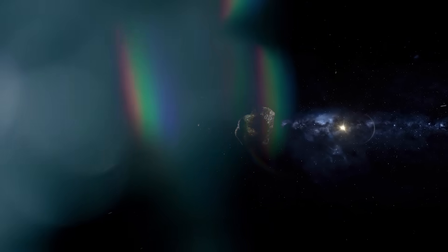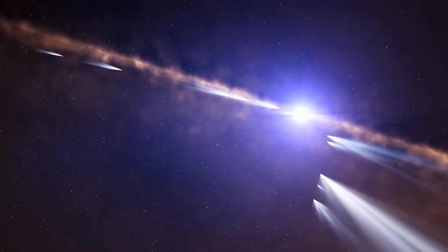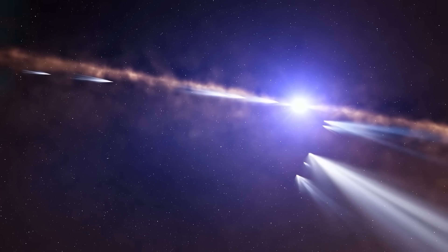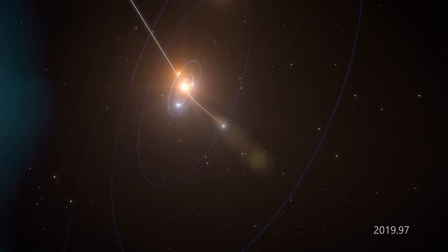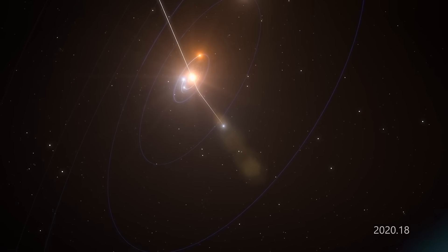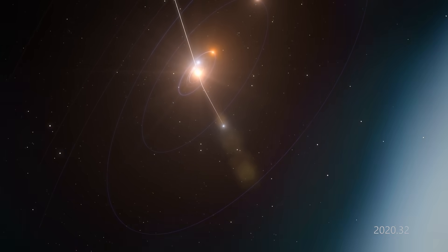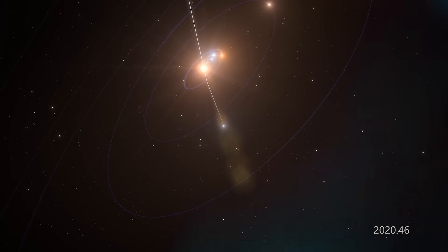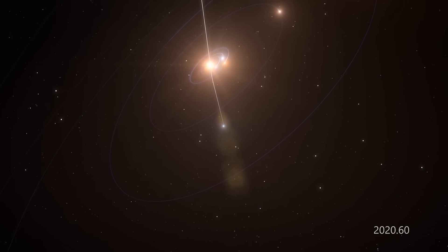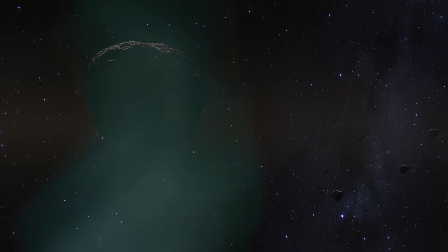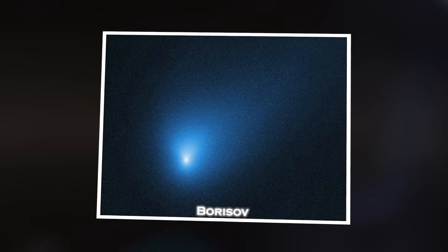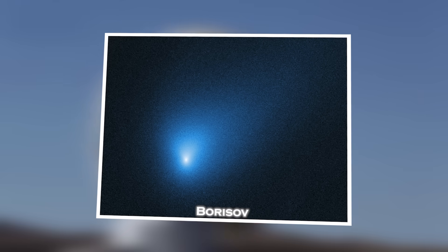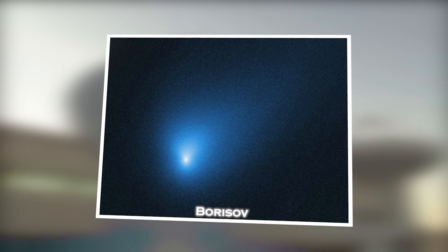To understand how serious this discovery is, we have to look at the two interstellar objects that came before it. In 2017, Oumuamua burst into the scientific world with its strange elongated shape, lack of comet tail, and mysterious acceleration after passing the sun despite showing no signs of gas or propulsion. Then in 2019, Borisov entered the picture—clearly a comet, yes, but faster and more volatile than anything seen before.